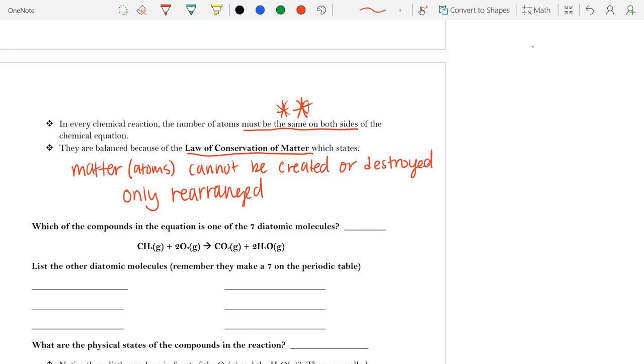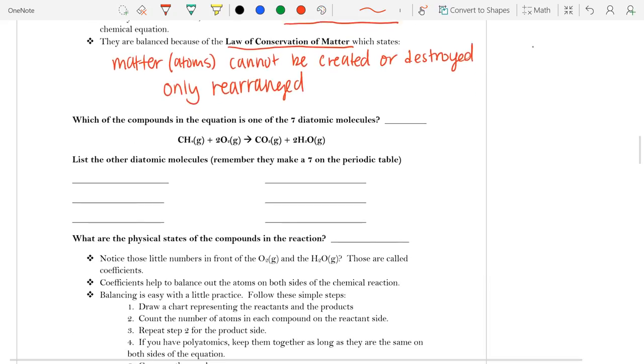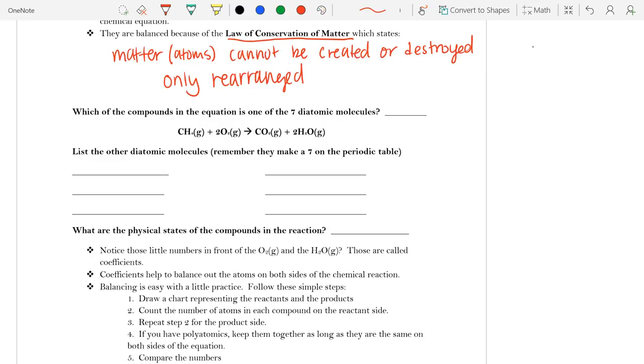But let's look at the next part. Which of the compounds in the equation is one of the seven diatomic molecules? Okay. Well, let's break down what's happening. So there's seven of some of these diatomic molecules.